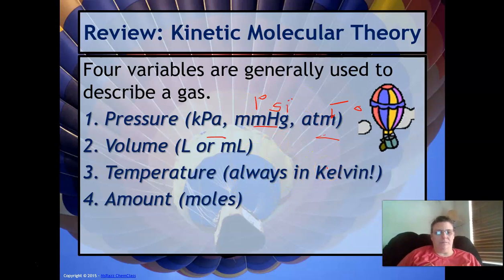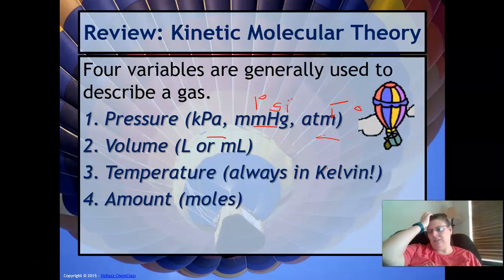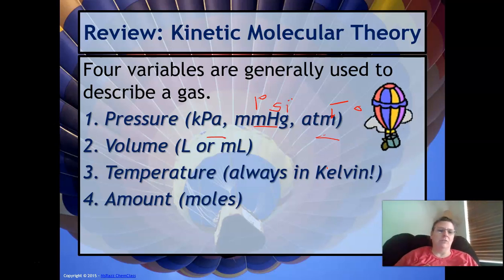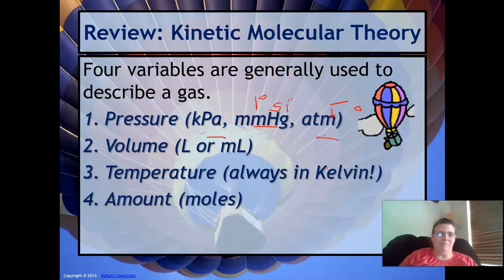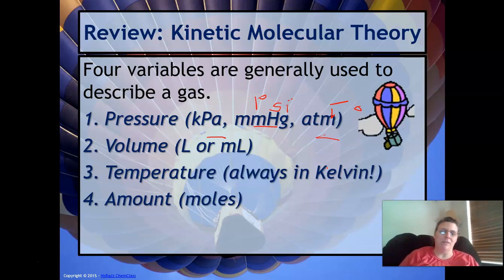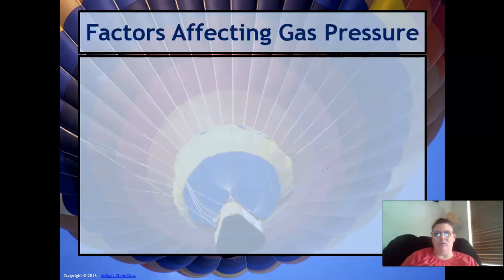Volume can be in any kind of liters — deciliters, centiliters, that kind of stuff. All of our temperatures need to be in Kelvin — you add 273 to all your temperatures in Celsius to get Kelvin. And moles — of course you can convert from grams to moles.